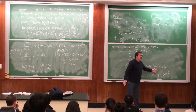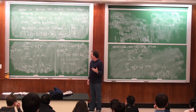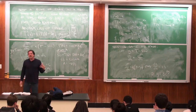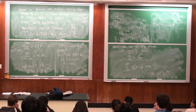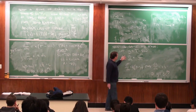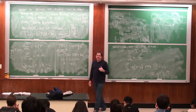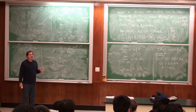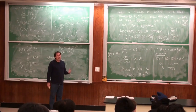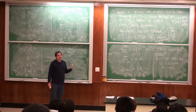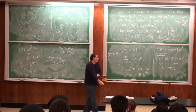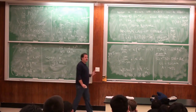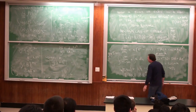Someone posted on Piazza asking why e shows up all over the place. This is why: many differential equations say the derivative of a thing has some relation to its value — exponential growth, exponential decay, heating, cooling. And as we saw when we played with power series, sines and cosines are really exponentials in disguise. Also, hyperbolic sine and cosine are just sums of exponentials. So a lot of things have exponentials showing up in them.